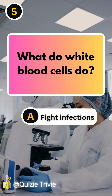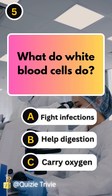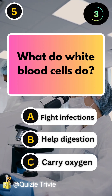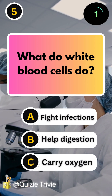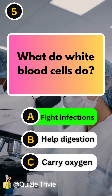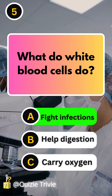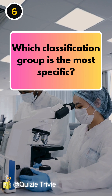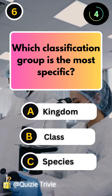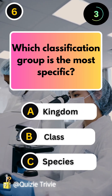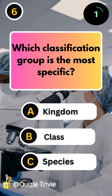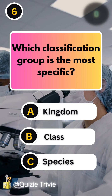What do white blood cells do? Fight infections. Which classification group is the most specific? Species.